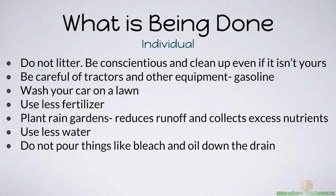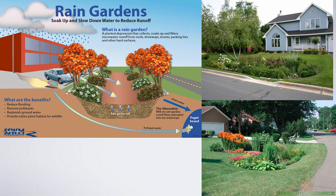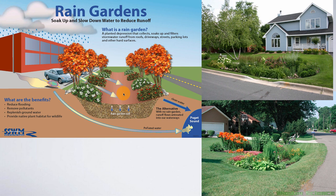Using less water — that's an easy one. Don't pour things like bleach and oil down the drain, because those things can really kill the microbes used in water treatment plants. Be careful of tractors and other equipment because they use a lot of gasoline. Wash your car on a lawn rather than on dirt, because the chemicals you're using can find their way into sewage. Using less fertilizer is a big deal — when you have excess fertilizer, those nitrates and phosphates find themselves into a water stream and create algae blooms. One thing I really like is planting a rain garden. Rain gardens are really cool because they reduce the amount of runoff from your house and collect excess nutrients, preventing them from entering the water. Here's an example: the oil from a car that would normally go into the sewer can go into the garden instead — plants will absorb those nutrients and actually use them to grow.